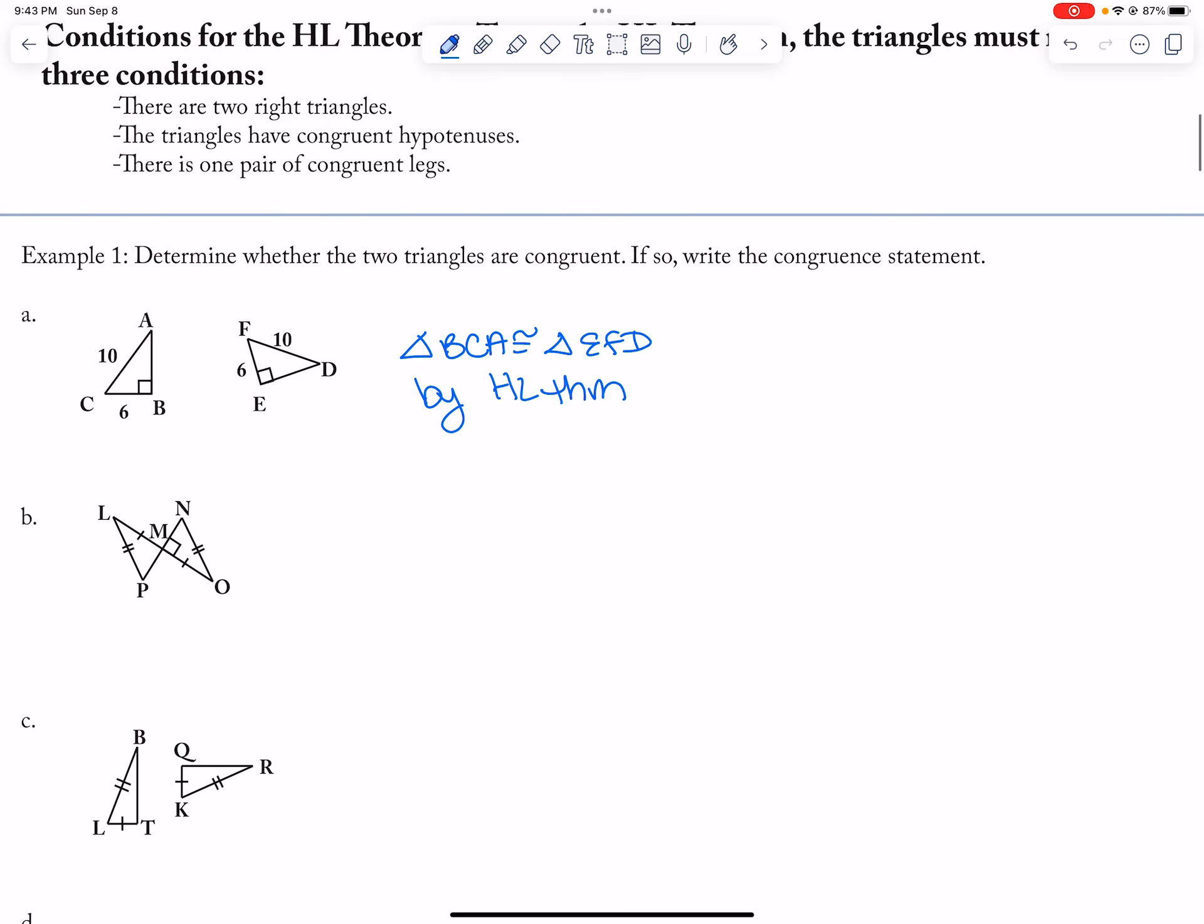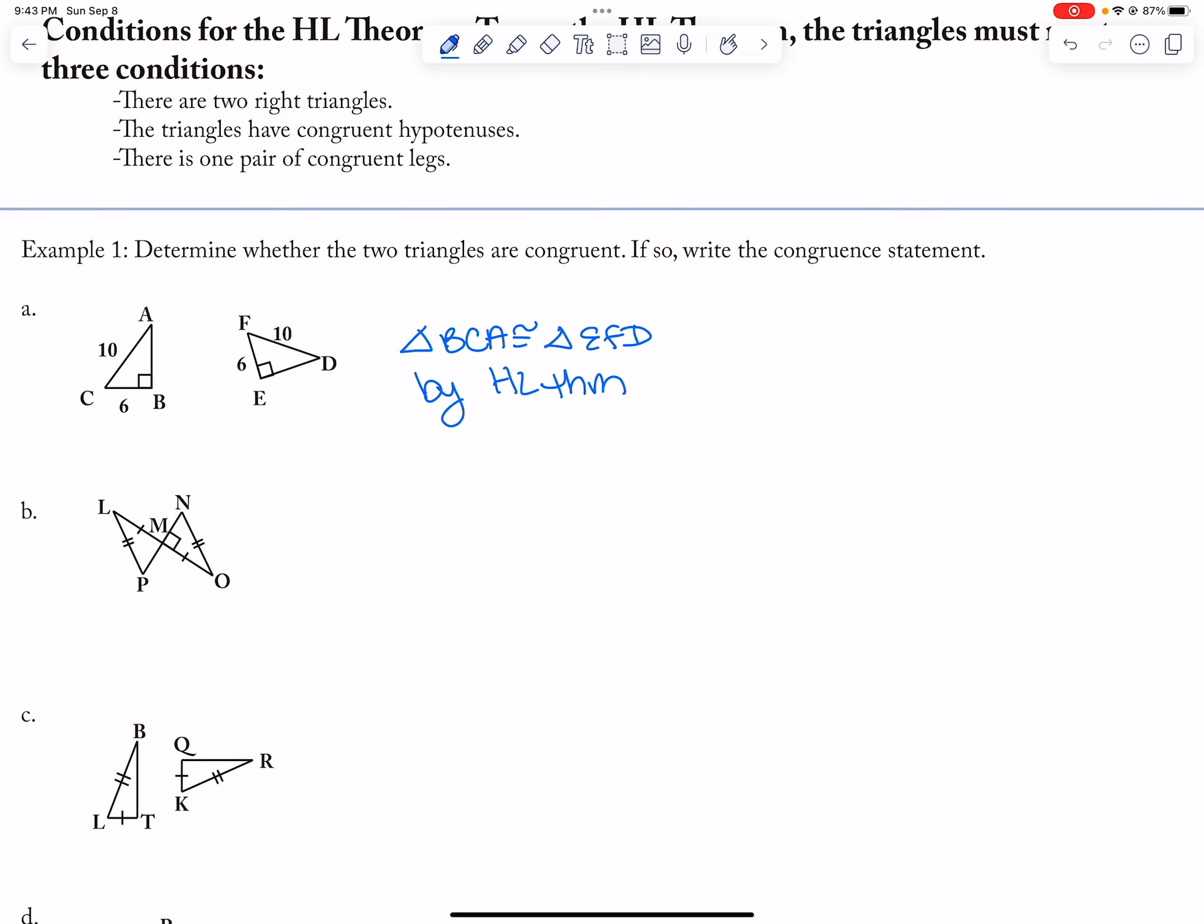And then this one also, right angle, congruent hypotenuse, congruent leg. So triangle MPL is congruent to triangle MNO by HL theorem.